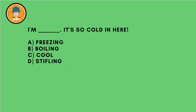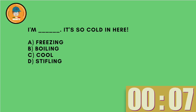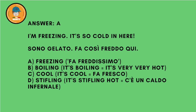I'm mmm. It's so cold in here. A: freezing. B: boiling. C: cool. D: stifling. And the answer is A — freezing. I'm freezing — fa freddissimo. Note that boiling is very, very hot. Cool means fresco. Stifling — it's very, very hot.